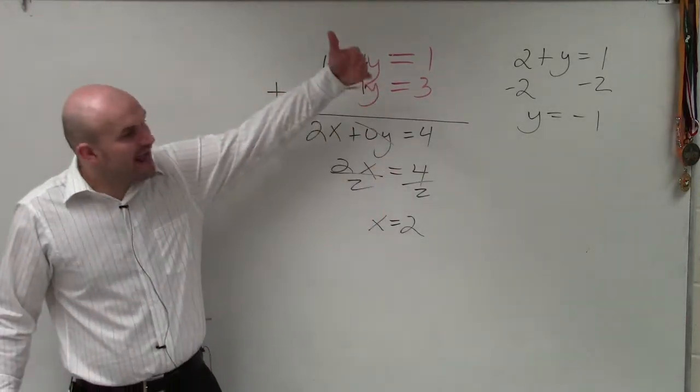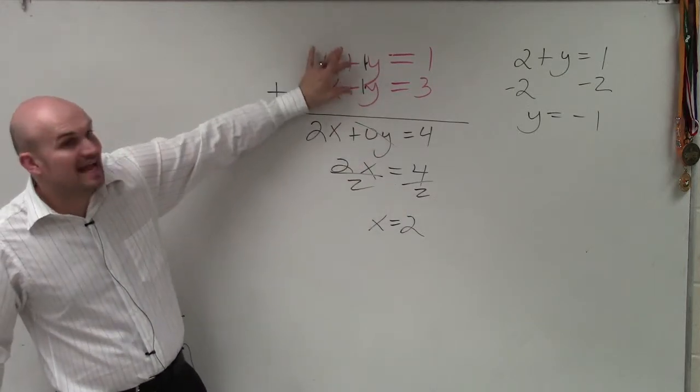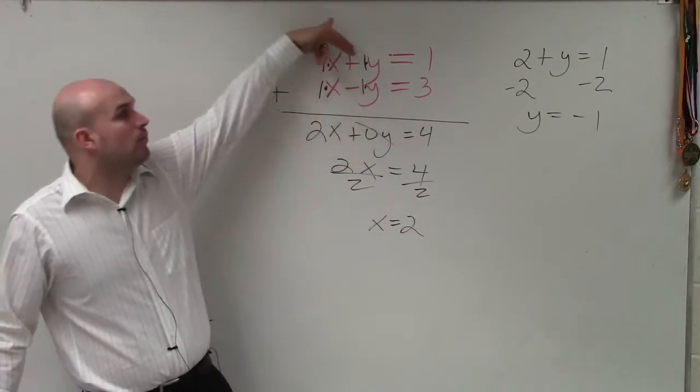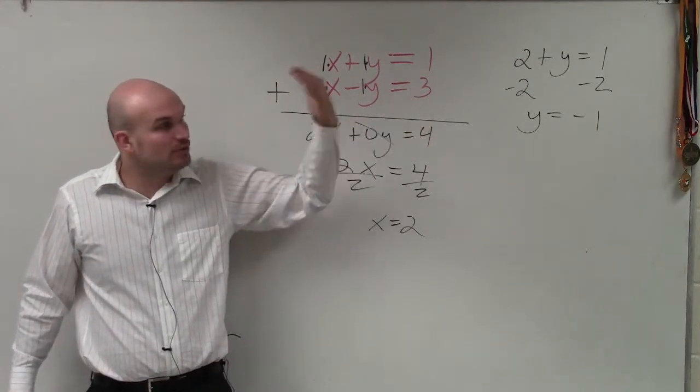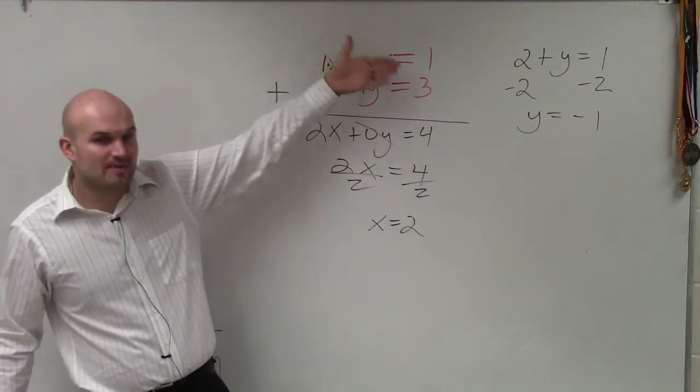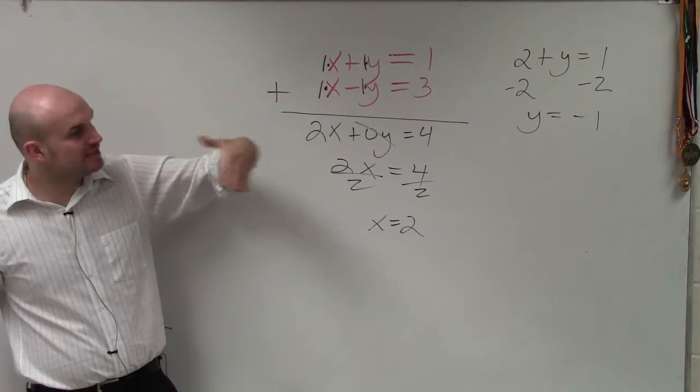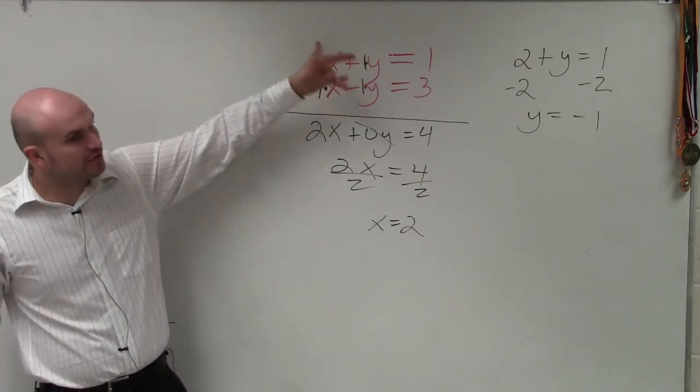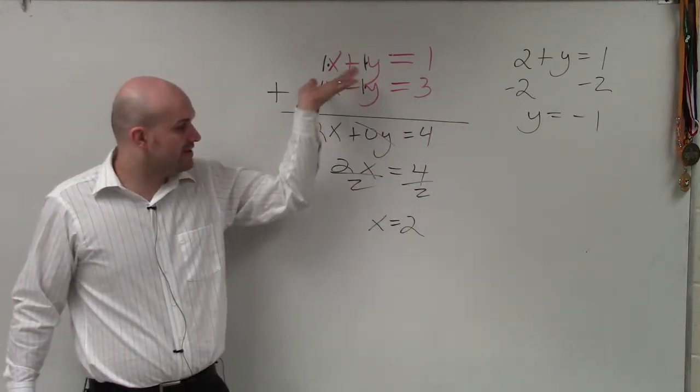Now, by adding the two equations, I eliminated the y. Because notice, they had the same coefficient, but one was positive, one was negative. So when you're adding equations, you eliminate the variable when they have exactly the same and one's positive and one's negative. So when you're looking to doing this elimination, that's what you're going to want to look for. You're going to want to look for having the same coefficient, one positive, one negative, to add them.